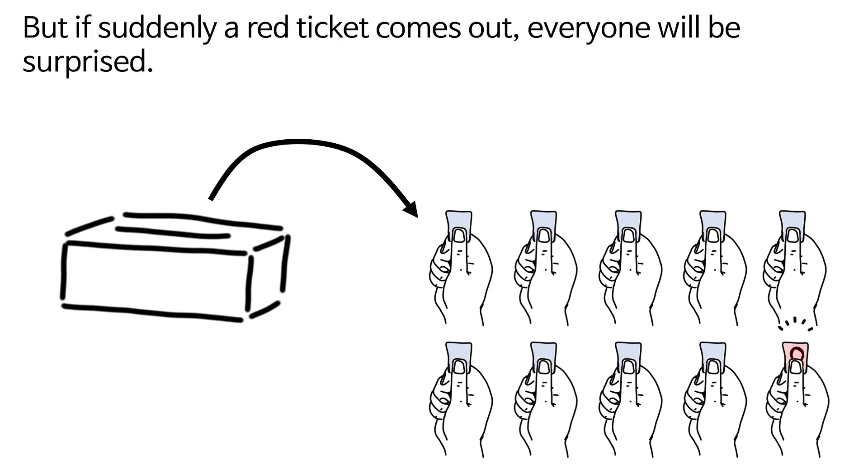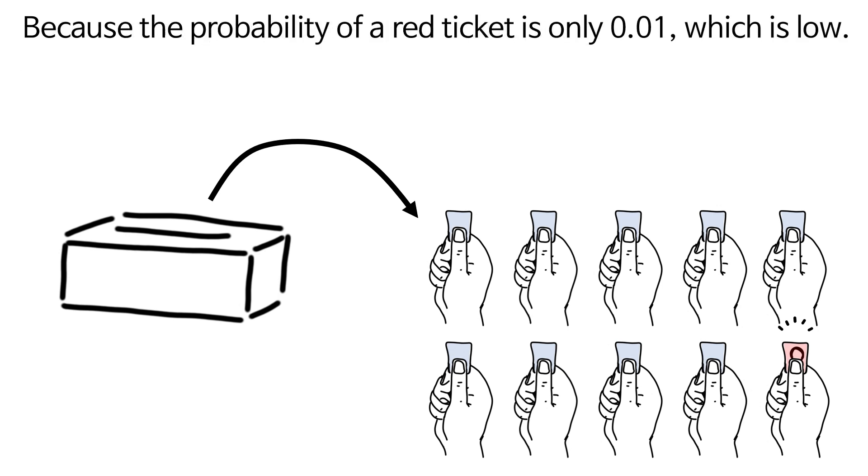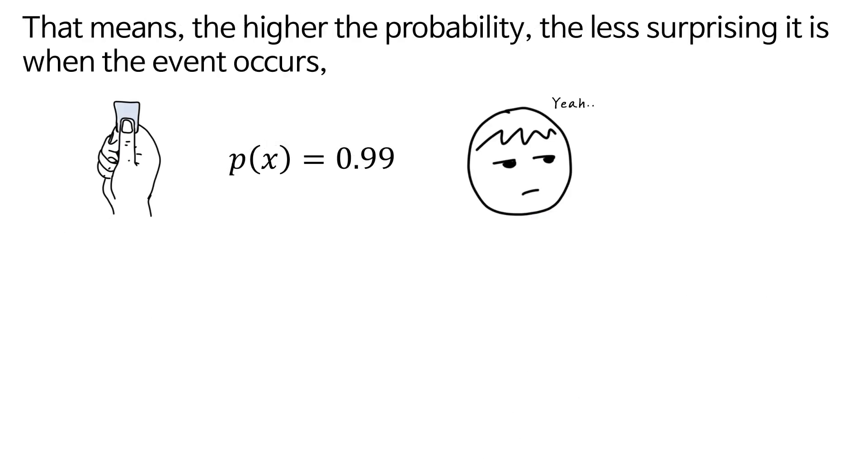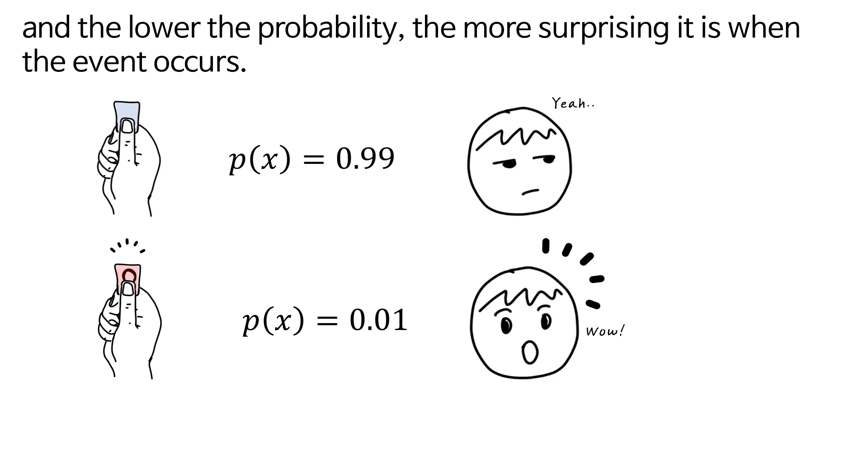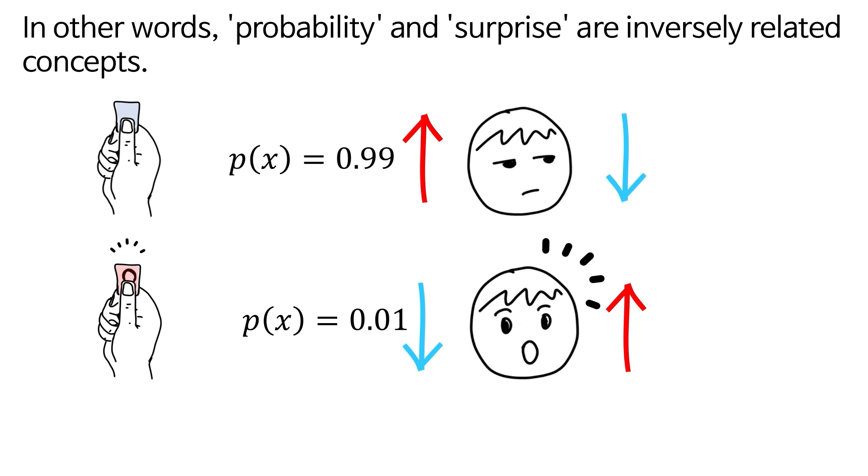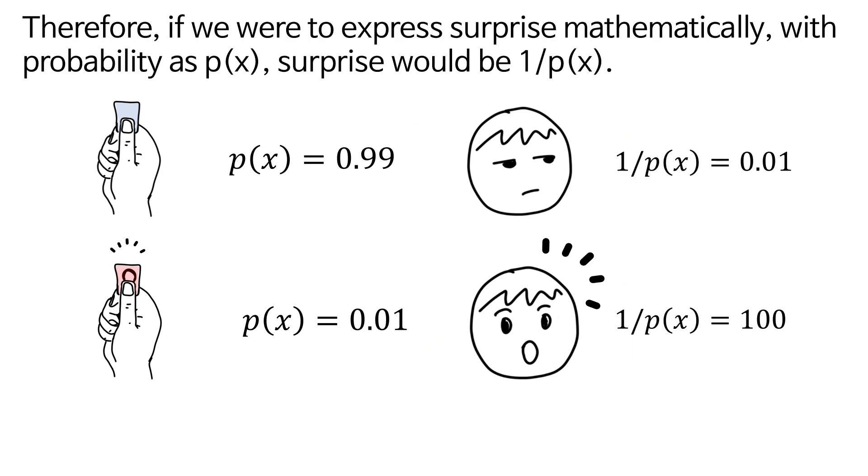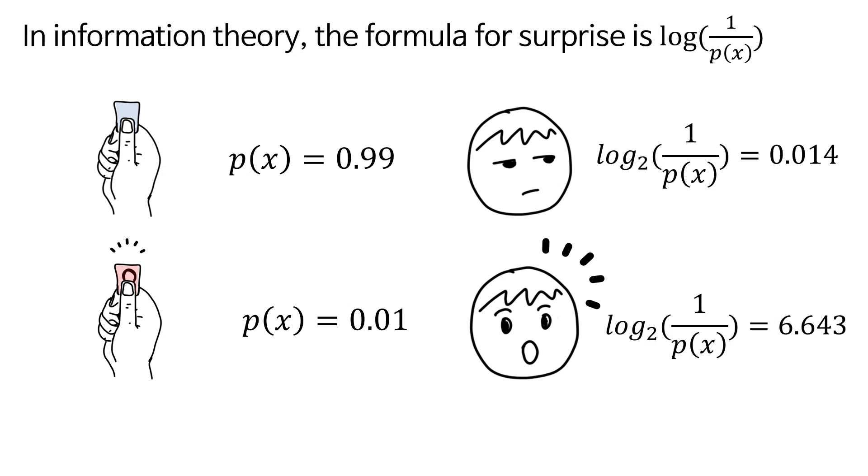But if suddenly a red ticket comes out, everyone will be surprised. Because the probability of a red ticket is only 0.01, which is low. That means, the higher the probability, the less surprising it is when the event occurs. And the lower the probability, the more surprising it is when the event occurs. In other words, probability and surprise are inversely related concepts. Therefore, if we were to express surprise mathematically, with probability as p(x), surprise would be 1 over p(x).